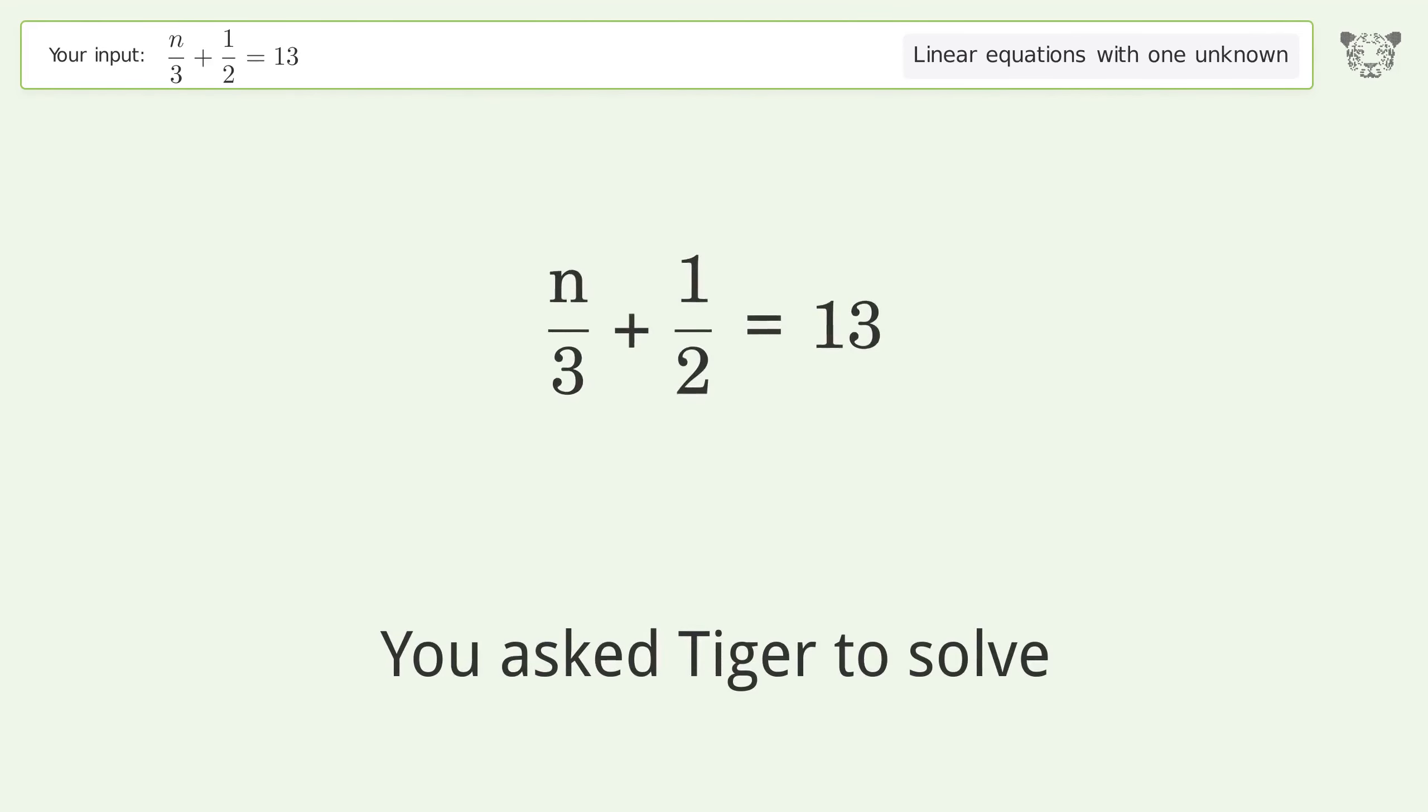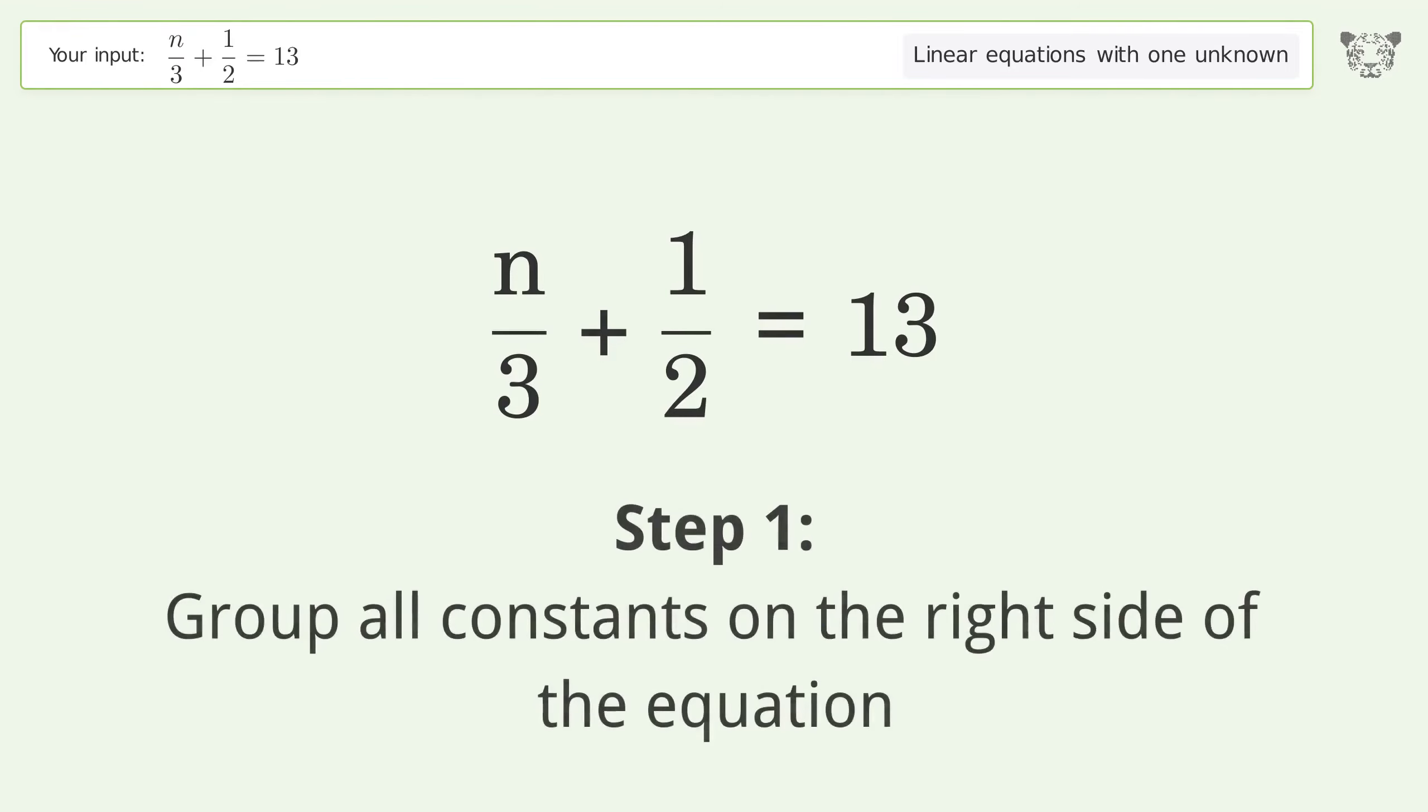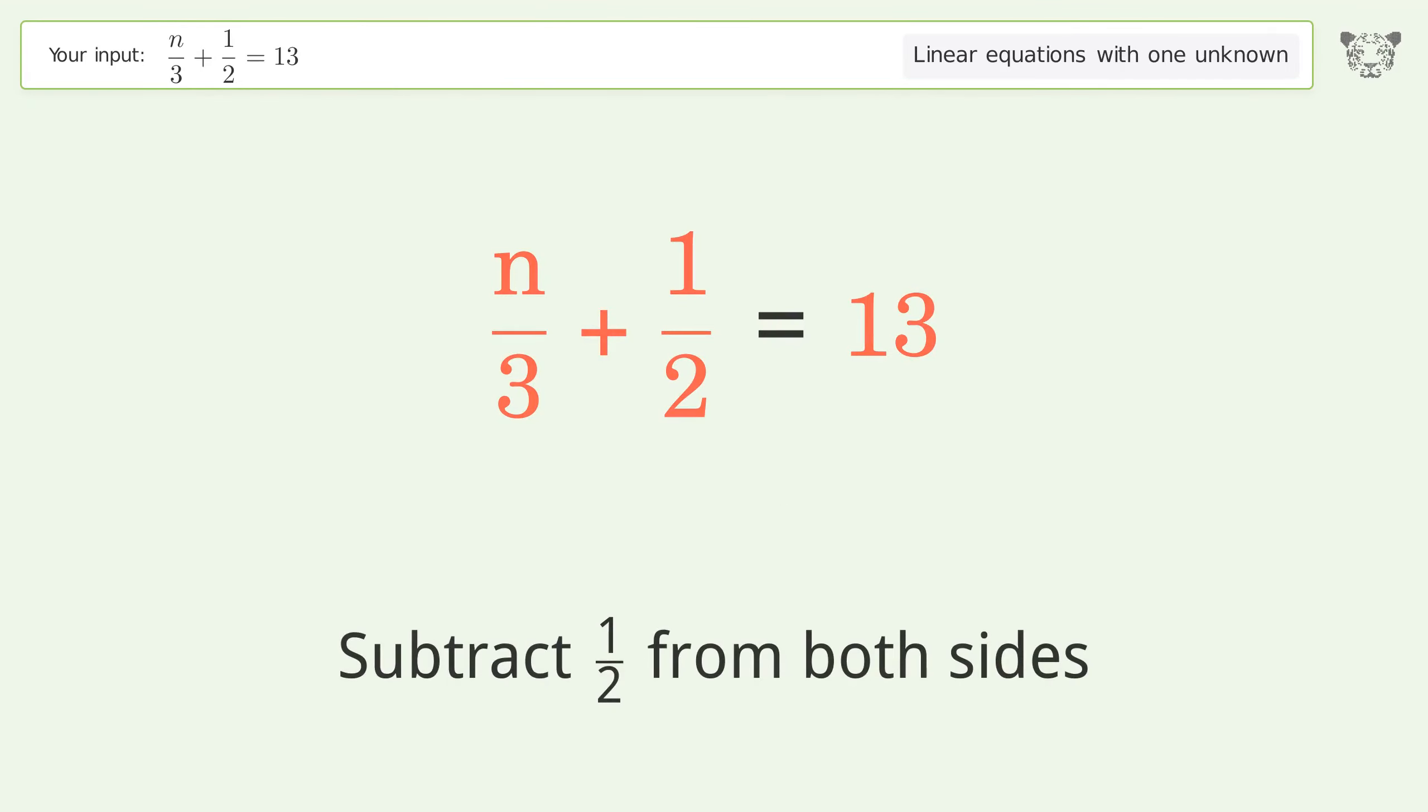You asked Tiger to solve this. This deals with linear equations with one unknown. The final result is n equals 75 over 2. Let's solve it step by step. Group all constants on the right side of the equation. Subtract 1 over 2 from both sides.